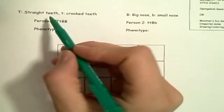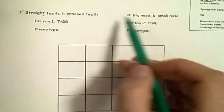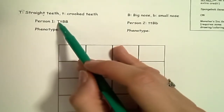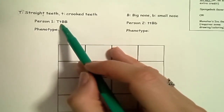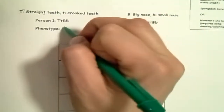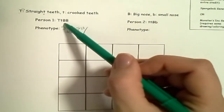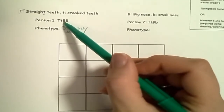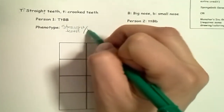Here are our traits. Straight teeth is dominant; crooked teeth is recessive. Big nose is dominant; small nose is recessive. Person one's genotype: big T, little t. They have a big T, so they have straight teeth. And for the second trait, big B, big B — they have at least one dominant B, so they are going to have a big nose.